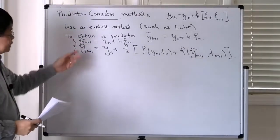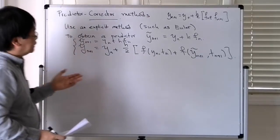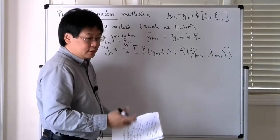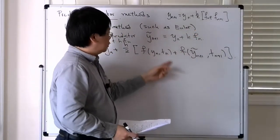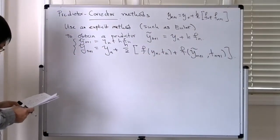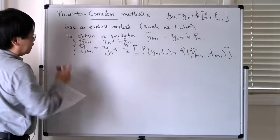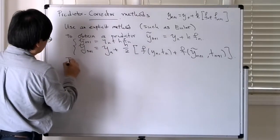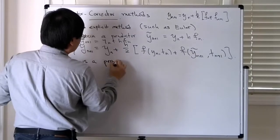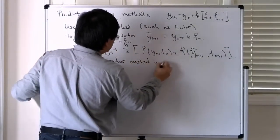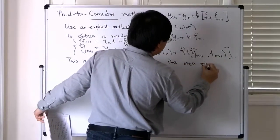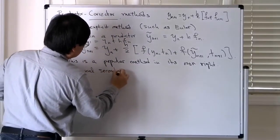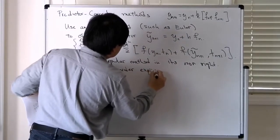This method is explicit — it's not quite the original trapezoidal rule, but you can often check that you achieve the same order of accuracy as the trapezoidal rule through this predictor-corrector form. This is actually quite a popular numerical method in its own right — it is the classical second-order explicit Runge-Kutta method.